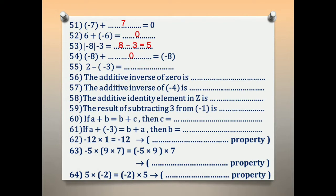Number 55: 2 minus negative 3. The answer is 2 plus 3 equals 5.